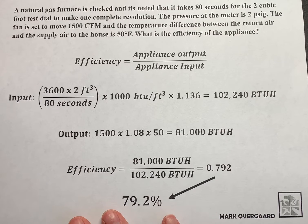We have a natural gas furnace. It's clocked and it's noted that it takes 80 seconds for the two cubic foot test dial to make one complete revolution. The pressure at the meter is two psig.